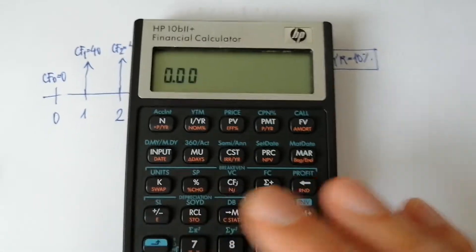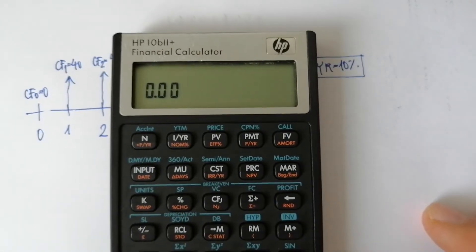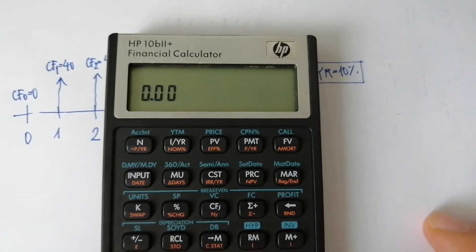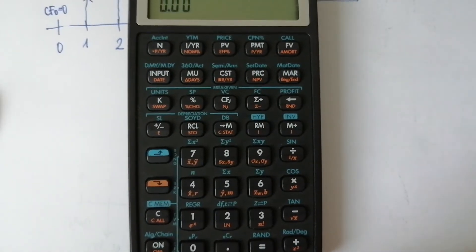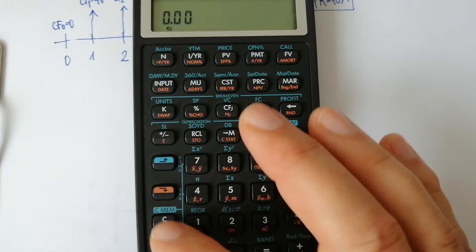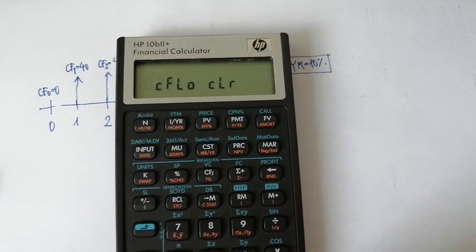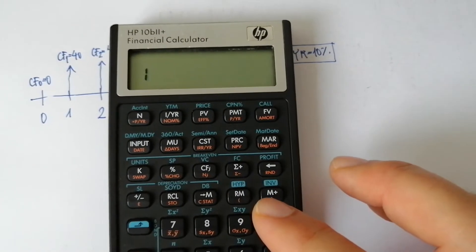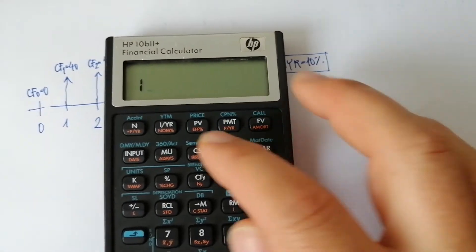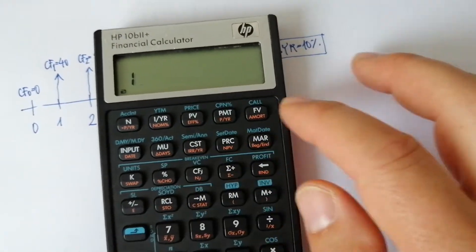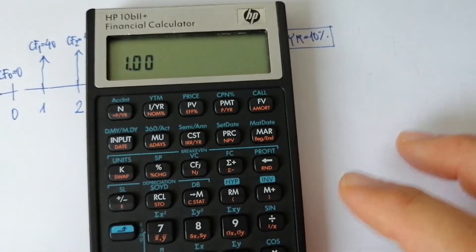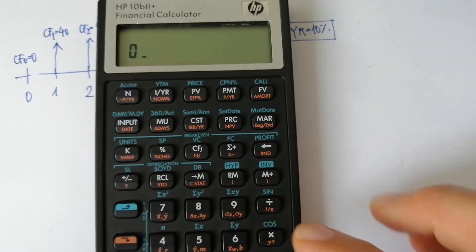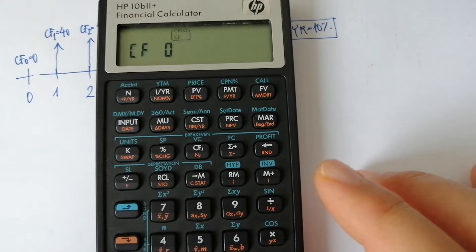Let's start on this calculator. If you don't want any garbage in the memory, first you must clear the cash flow memory — blue shift, clear memory, cash flow. And you can set one period per year, one cash flow per year. Red end, period per year. Then enter 10% annual interest rate. Zero is the first cash flow — enter zero, cash flow.